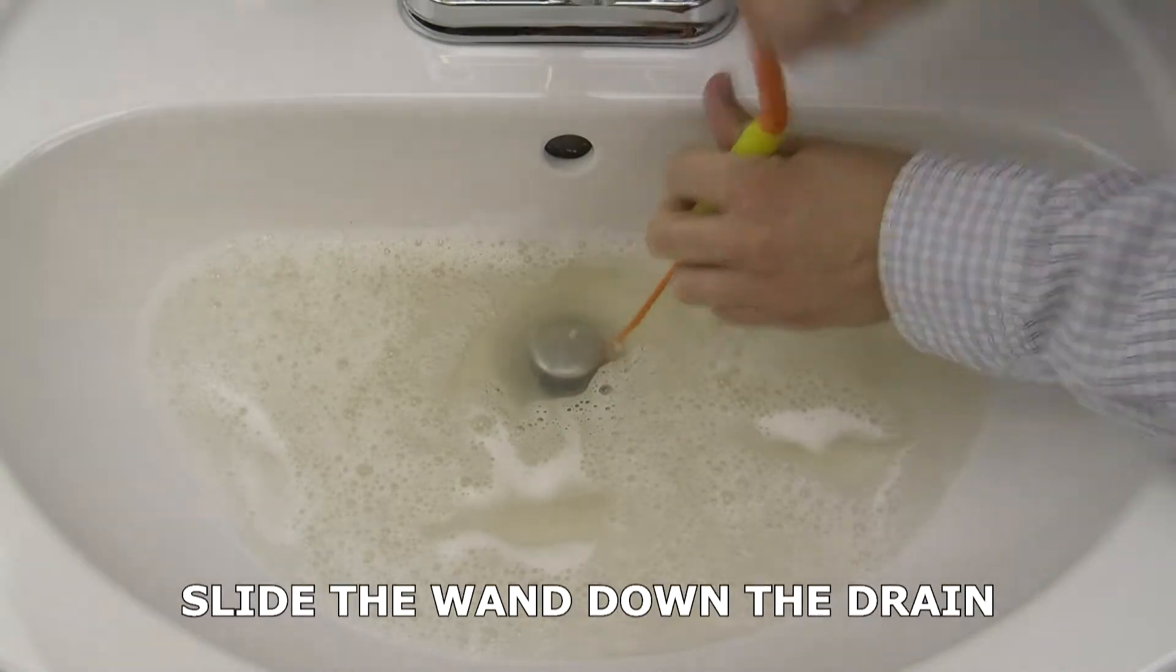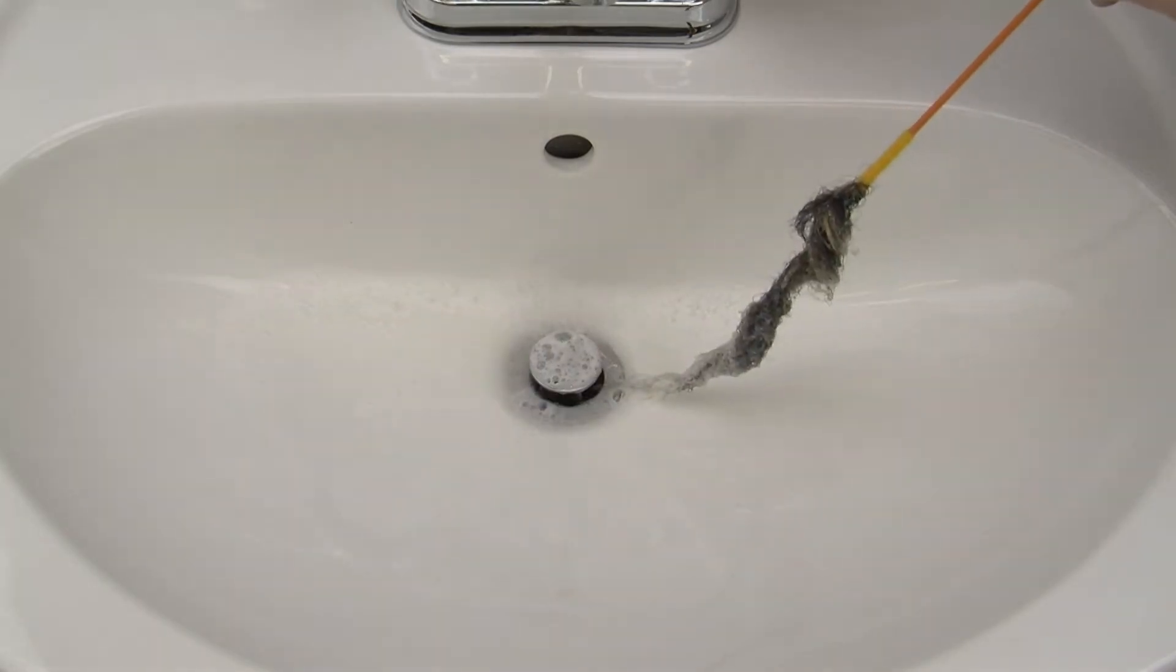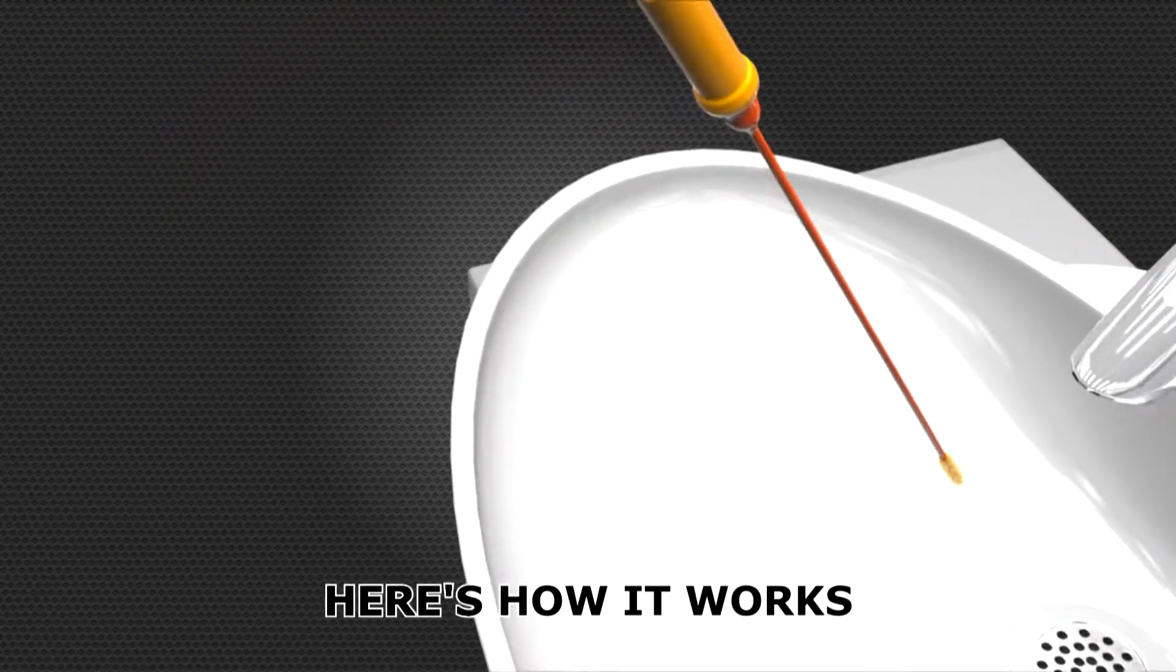Just slide the wand down the drain and spin the handle and remove the clog. It's that easy! Here's how it works.